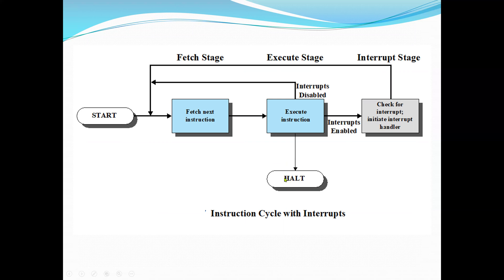This is the instruction cycle, this time with interrupts — the previous one had no interrupt. Our instruction cycle consists of fetch and execute stages; if not finished we test conditions and start over. To accommodate interrupts, an interrupt stage is added to the instruction cycle. In the interrupt stage, the processor checks if any interrupts have occurred, indicated by the presence of an interrupt signal. If no interrupts are pending, the processor proceeds to fetch the next instruction. If an interrupt is pending, the processor suspends execution of the current program and executes an interrupt handler routine.